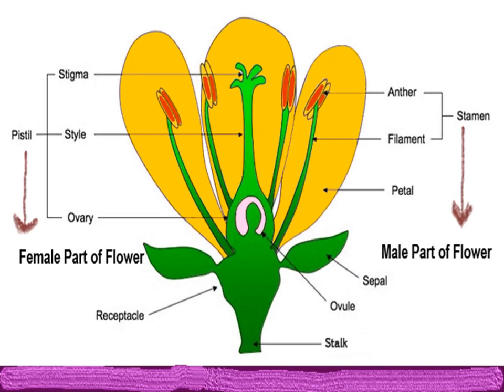The gynoecium is the female reproductive organ of the flower. It is the fourth whorl of the floral leaves, and its leaves are known as carpels, which resemble a flask in shape. Each carpel consists of a swollen part called the ovary. The ovary is connected with a tube called the style, which ends in an opening called the stigma. The gynoecium produces ovules inside the ovary.